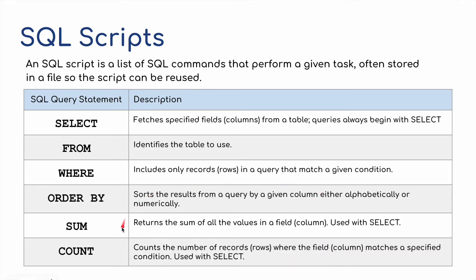These are the things we need to know as part of the syllabus. The SQL query statement SELECT is a way of fetching specific fields or columns from a table, and the query always begins with the word SELECT. We usually use SELECT FROM, where FROM identifies a table to be used. We can also use SELECT FROM WHERE, which only includes the records or rows in a query that match a given condition.